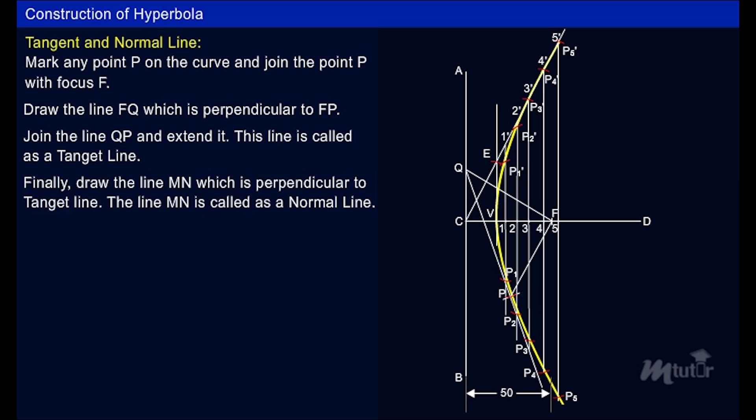Finally, draw the line MN which is perpendicular to tangent line. The line MN is called a normal line.